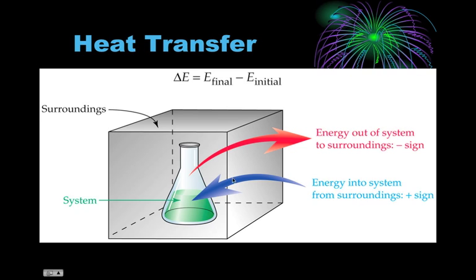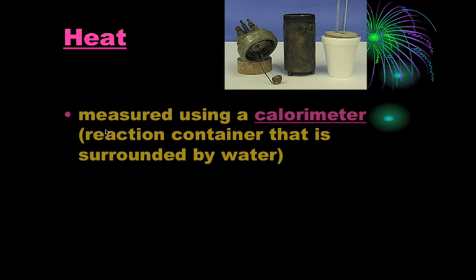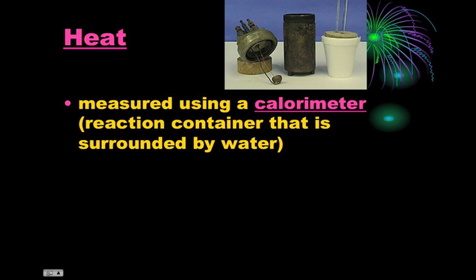If the energy is flowing out of the system then you're going to have a negative energy. And the other day I told you guys about enthalpy and how this would be like an exothermic reaction and you would have a negative delta H. Whereas if the energy is going into the system from the surroundings, your energy is going to be positive because we define everything in terms of the system, not the surroundings.